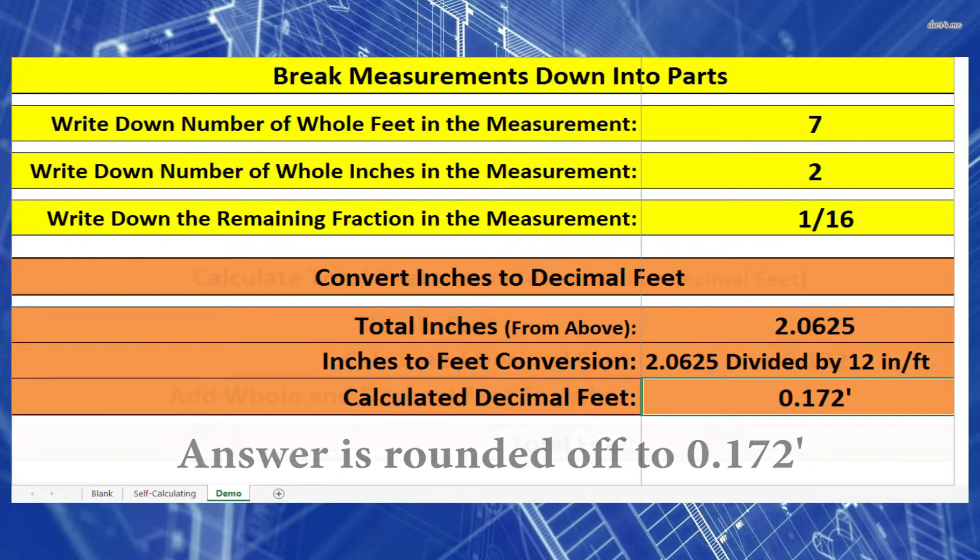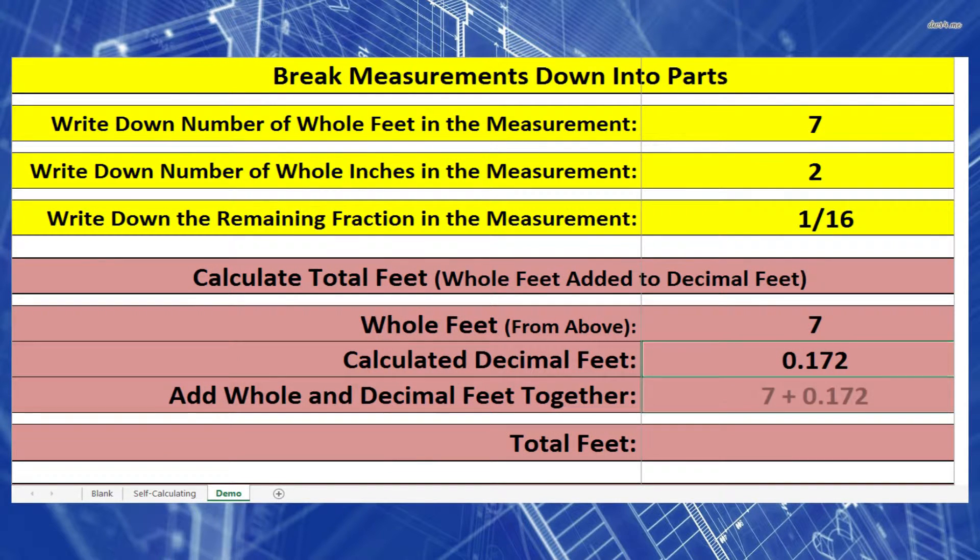Now I'm going to take that number and add it on to my whole feet which is 7. So 7 plus that number should give me 7.172 feet if I round it off.